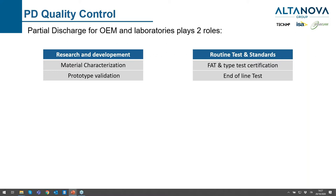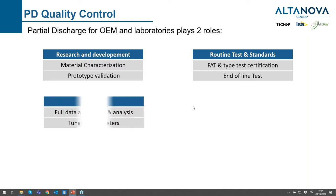The second role, which is more the quality role, is the factory acceptance test and the type test certification. If I am producing high voltage cables, I have to test all of them, and all of them shall have a very low partial discharge level and shall be done as a routine test — repeating the same actions and the same procedure every time.